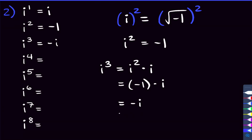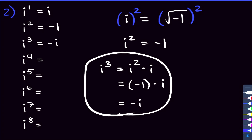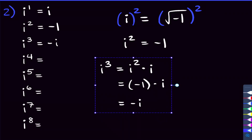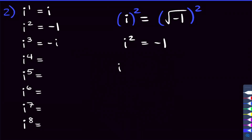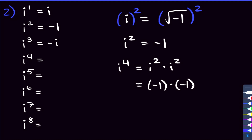For i to the fourth, we multiply i squared by i squared. We know i squared is negative 1, so i to the fourth equals negative 1 times negative 1, which is positive 1. So that's our first cycle of four: i, negative 1, negative i, 1.